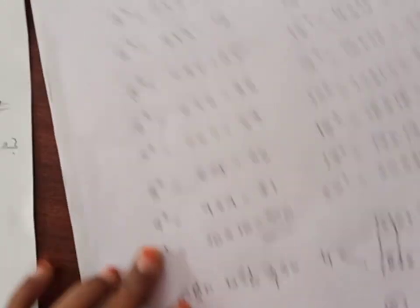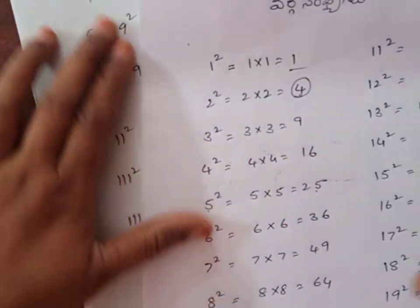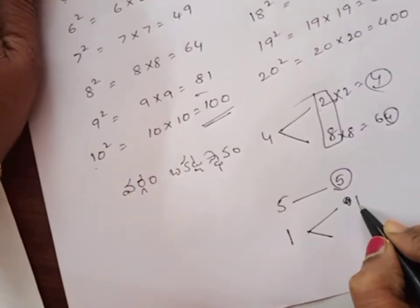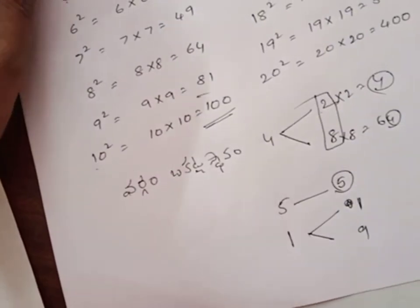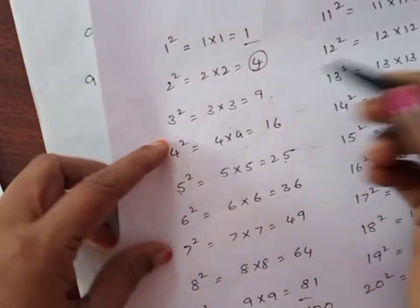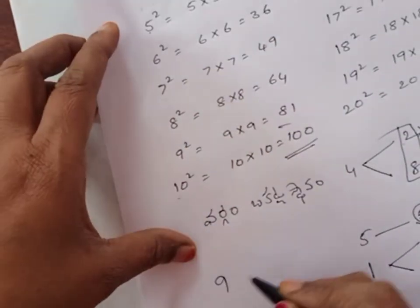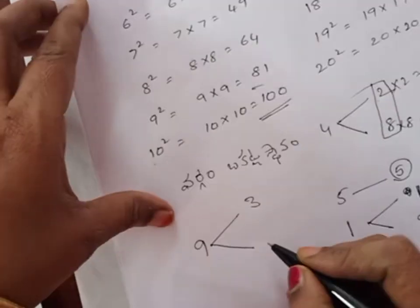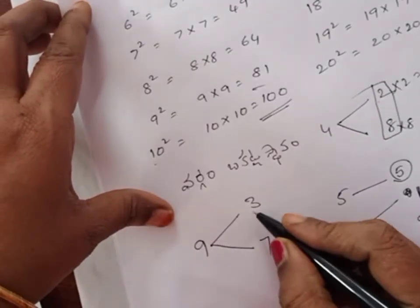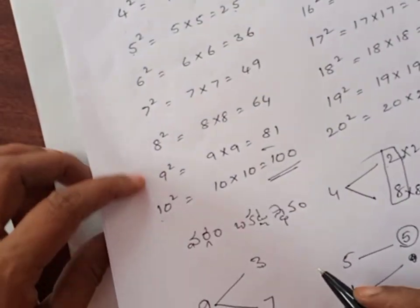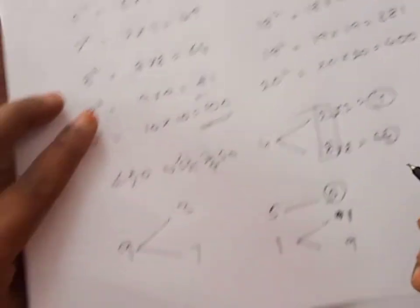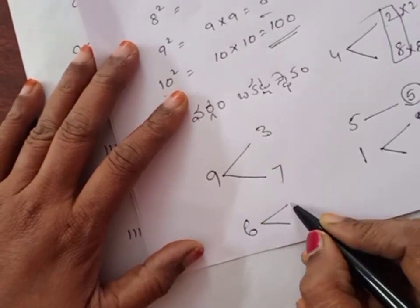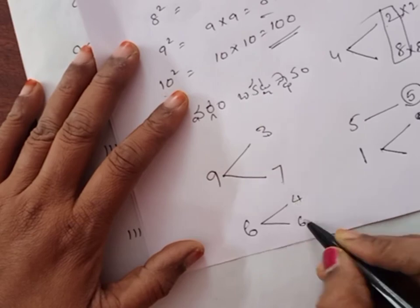If it is 1, then it is 1. 1, 2, 3. Next, 1 is 1. 3 is 1. 3 is 1. Next, it is 6. 2 is 4, 4, 4, 4, 4, 4, 5, 6, 6, 6, 6, 6, 6, 7, 7, 8, 8, 9.